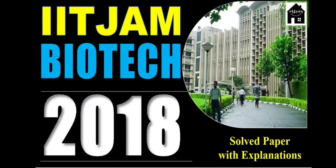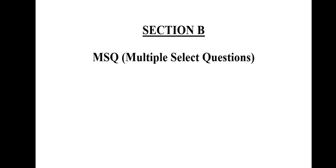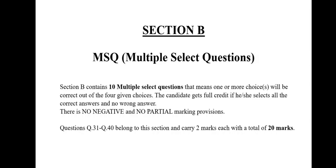Hello everyone, welcome to eVigyan Girl. Today we will be solving IIT Jam Biotech 2018 paper. Section B consists of 10 questions. Each question is of two marks. There is no negative marking but each question can have one or more than one correct answer. Partial answers will not be given any marks.